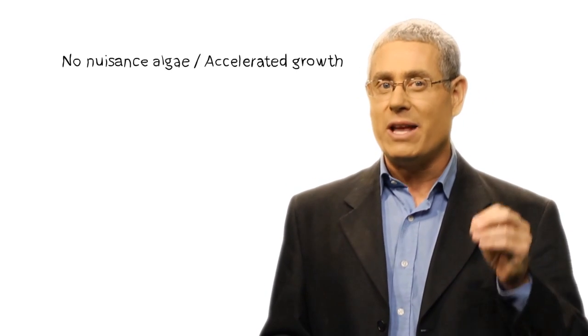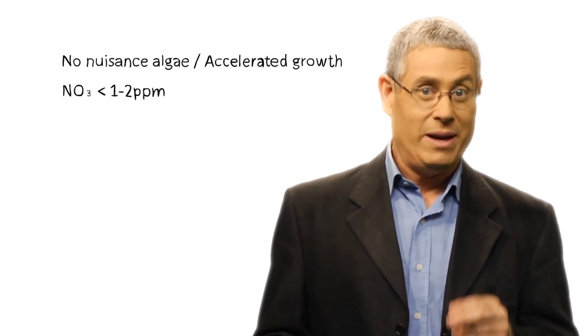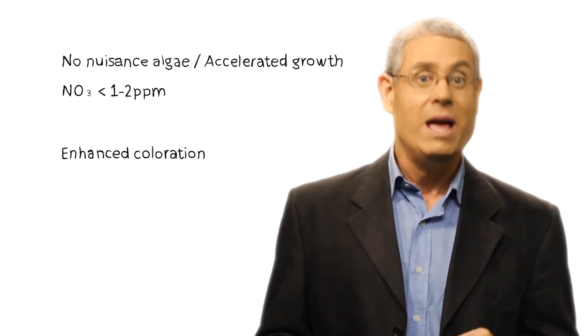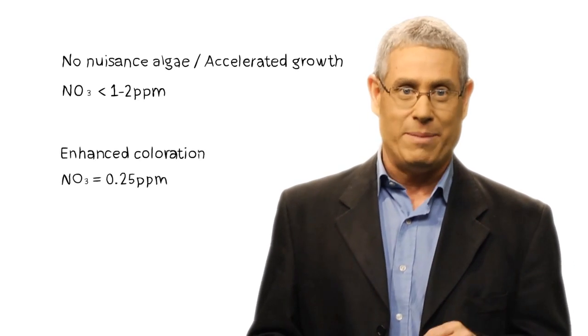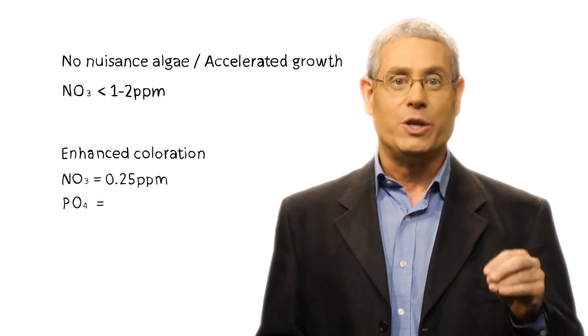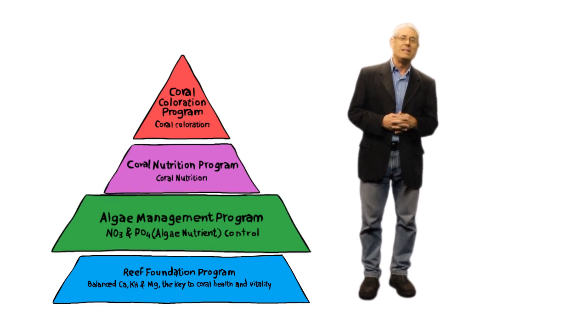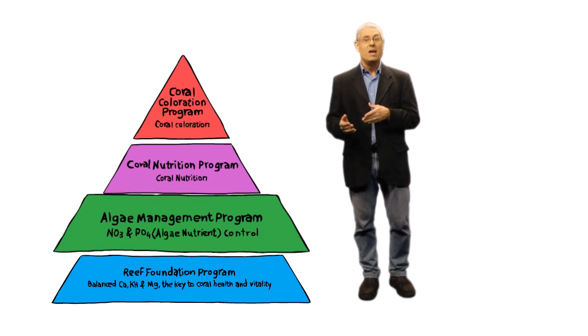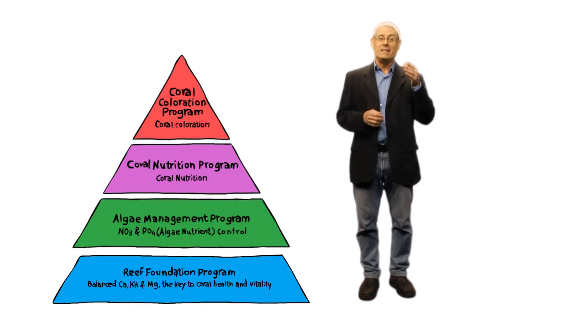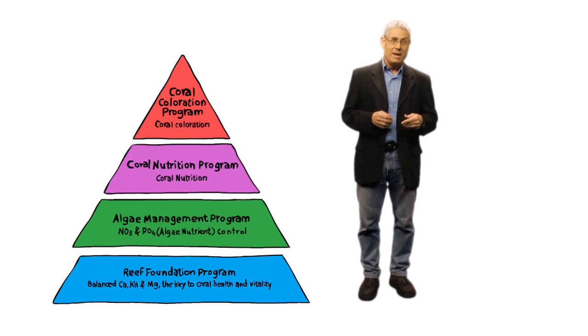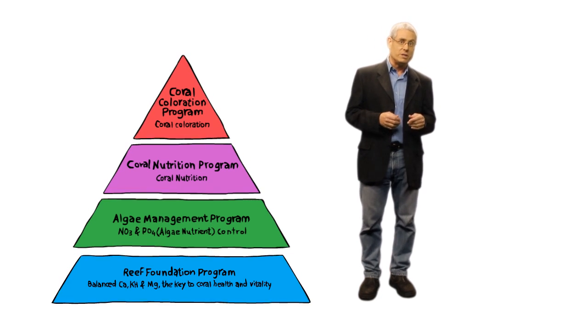Full instructions for using NOPOX or converting from other methods can be found on our website. However, as a rule of thumb to get rid of nuisance algae and promote accelerated coral growth, we recommend a nitrate level of between 1-2 ppm, and for enhanced coral coloration, a nitrate level of 0.25 ppm and phosphate level of 0.02 ppm. So there you have it. Our algae management program contains the supplement and test kits which can best help you set and maintain the desired levels of nitrate and phosphate, ensuring optimal water conditions for your aquarium.